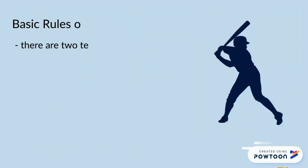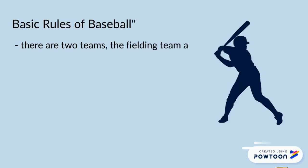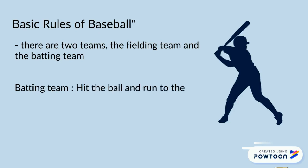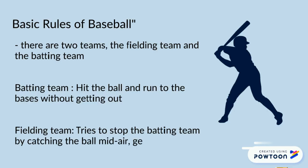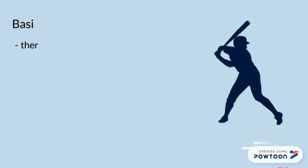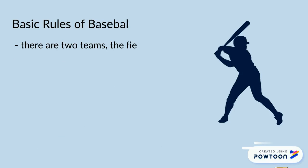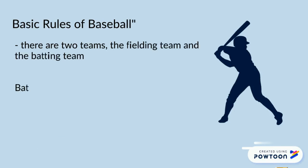The batting team will line up in a row of batters, in which the order of the batters will not change throughout the entire game. The batters will come up and bat at home base, and they will try to get the ball so that the fielders won't be able to catch it. The batters each will get three opportunities if there's a perfect pitch.